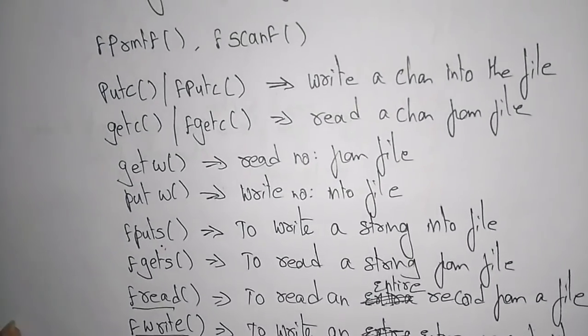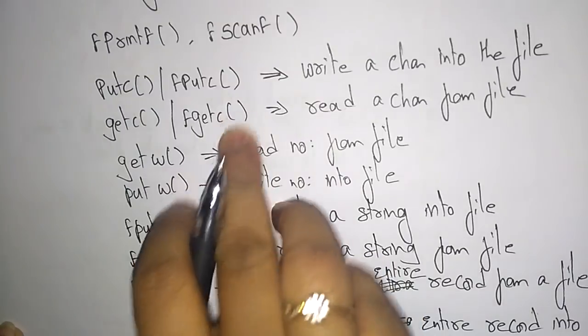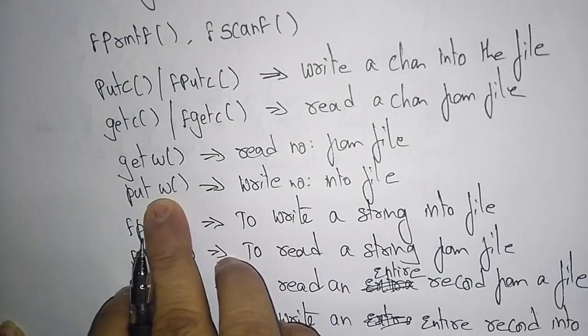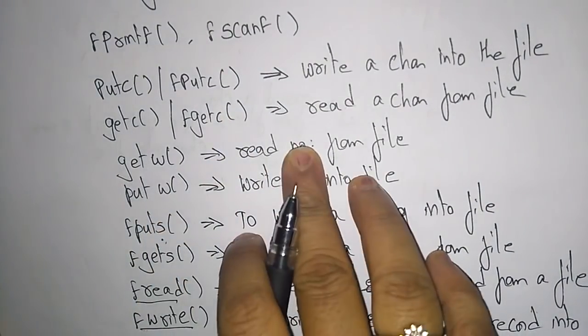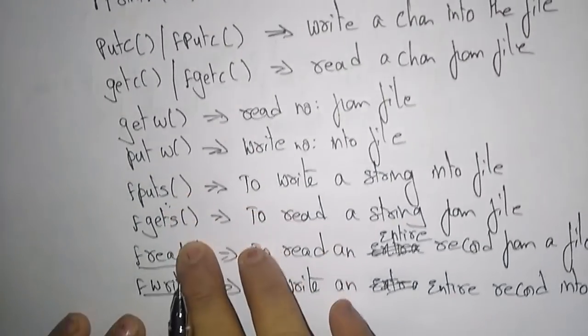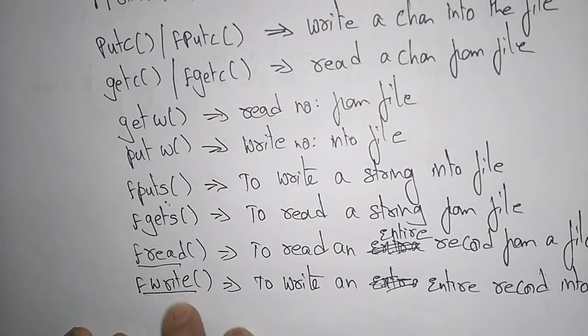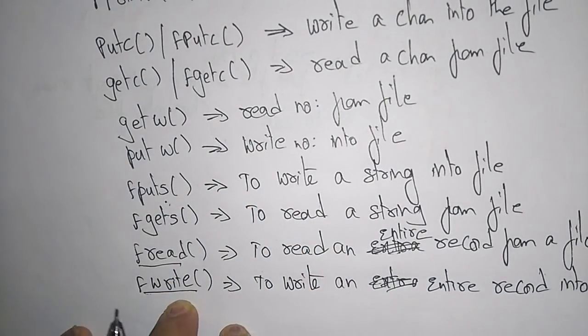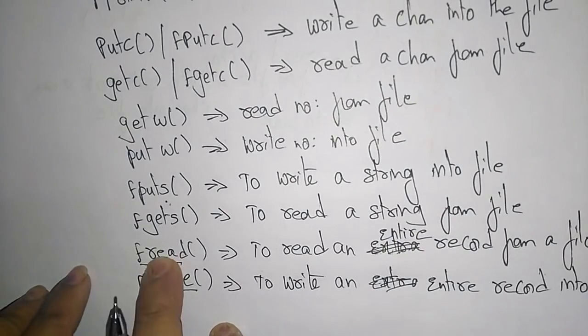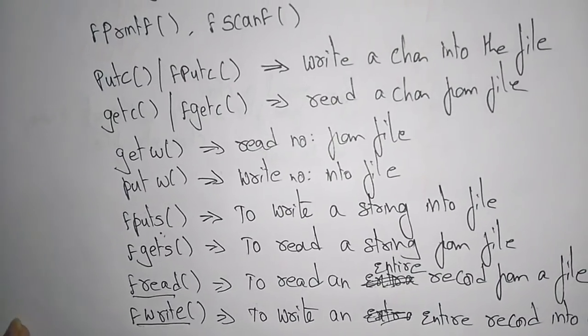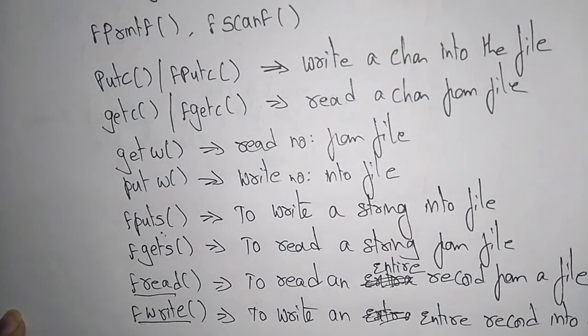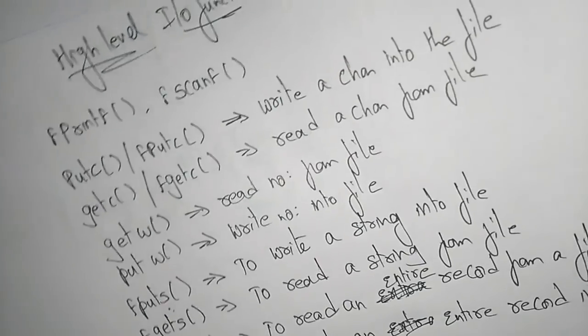So this is about the different high-level I/O functions: fprintf and fscanf, putc and getc, getw and putw for integer numbers, puts and gets for strings, and fread and fwrite for reading and writing an entire record from or into a file. Now let us see a simple program using these I/O functions.